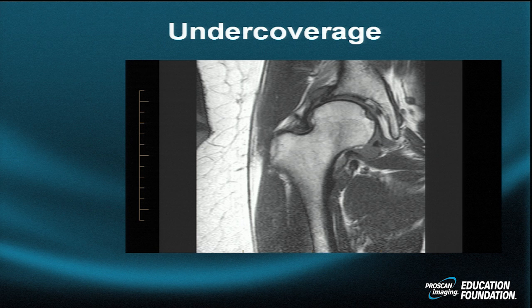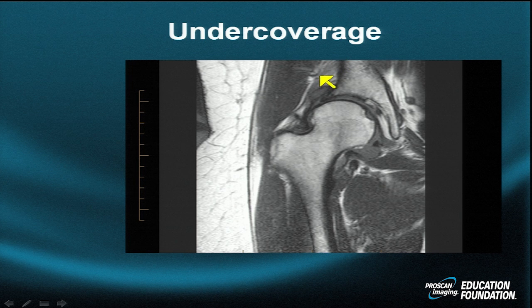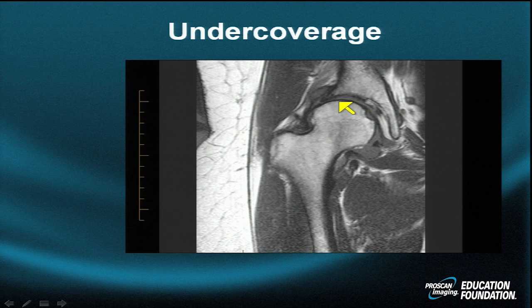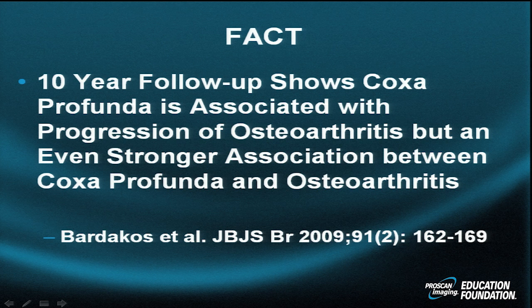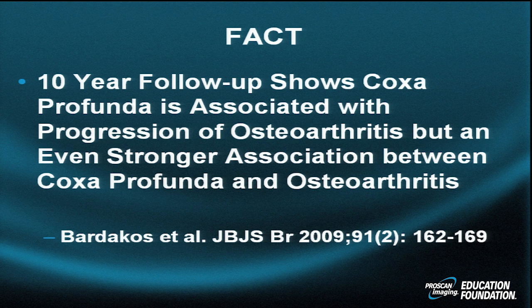The patient's symptoms are evident with muscles showing fatty infiltration and marked narrowing of the lateral joint space with loss of hyaline cartilage. A 10-year follow-up shows that coxa profunda is associated with progression of osteoarthritis, and an even stronger association between coxa profunda and osteoarthritis together is noted.